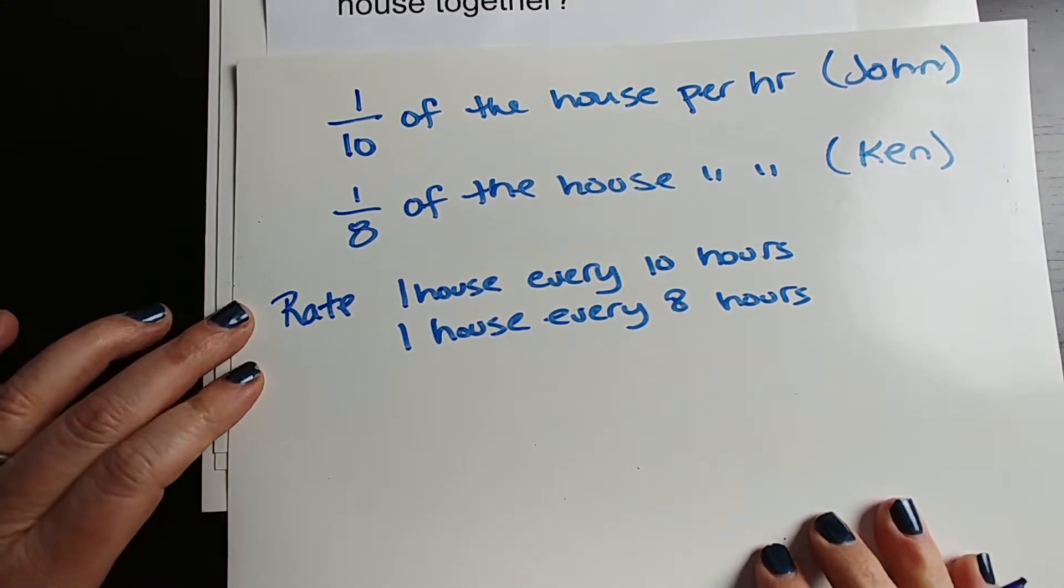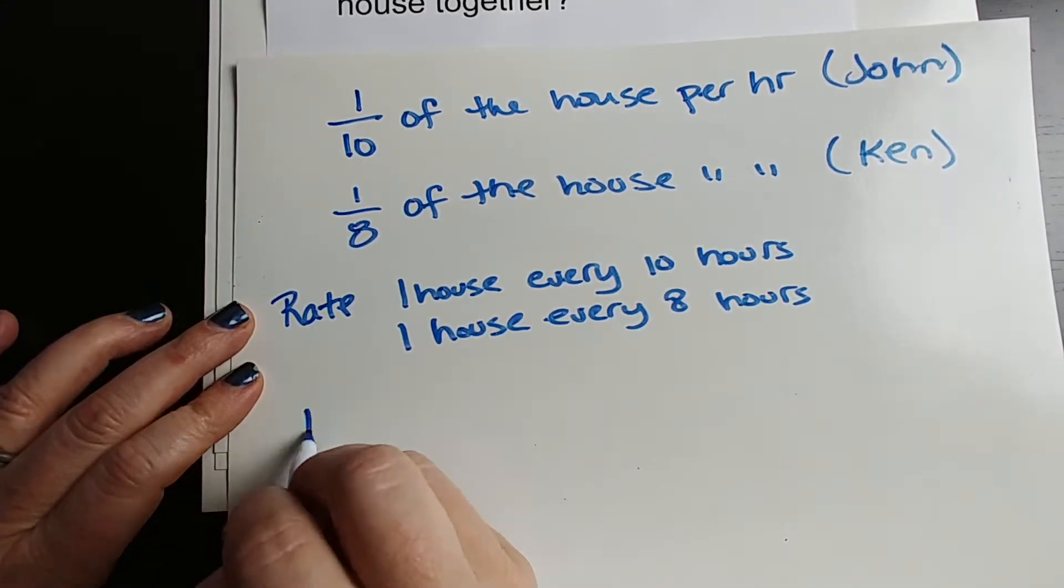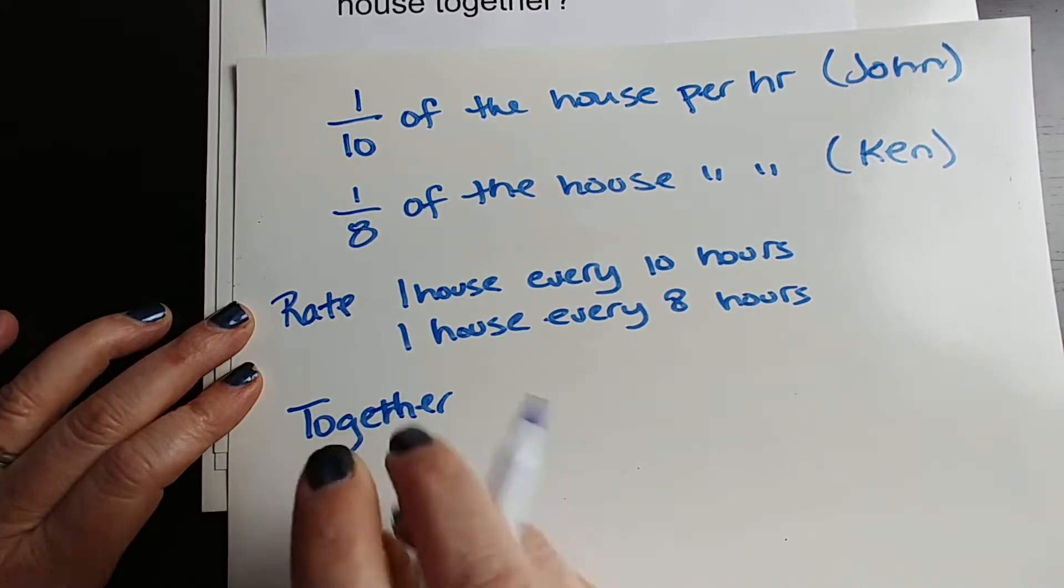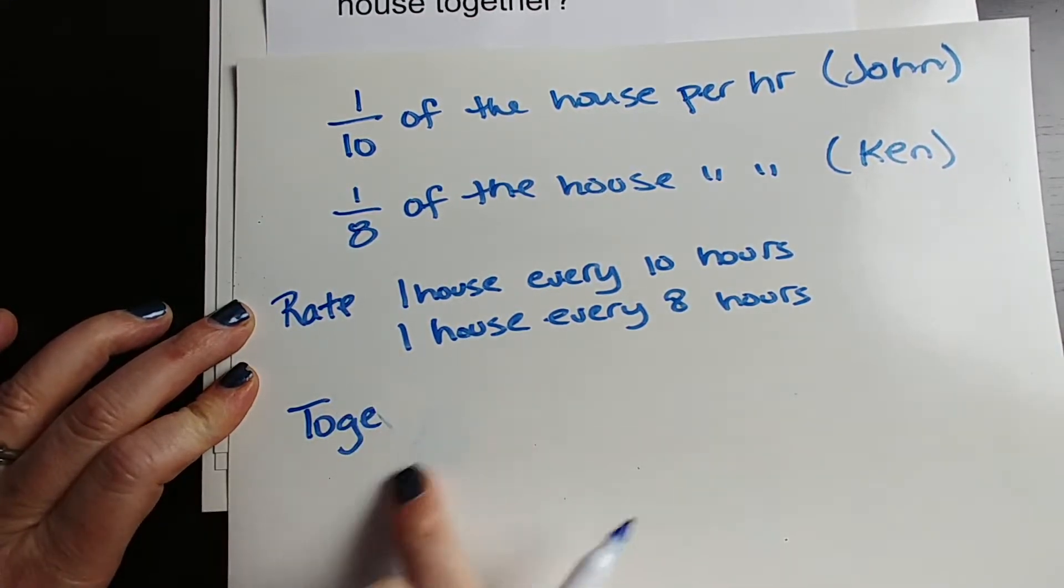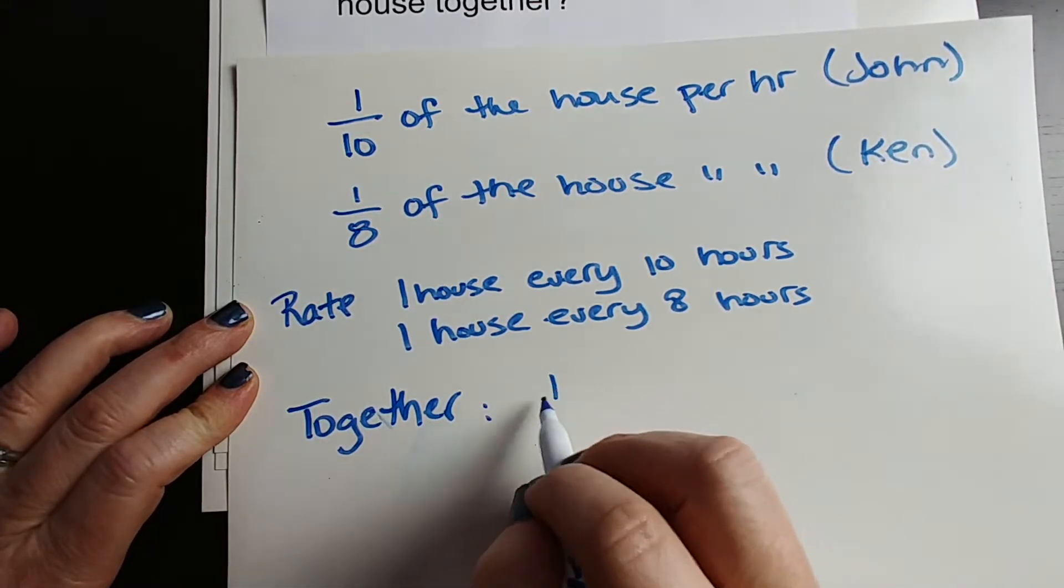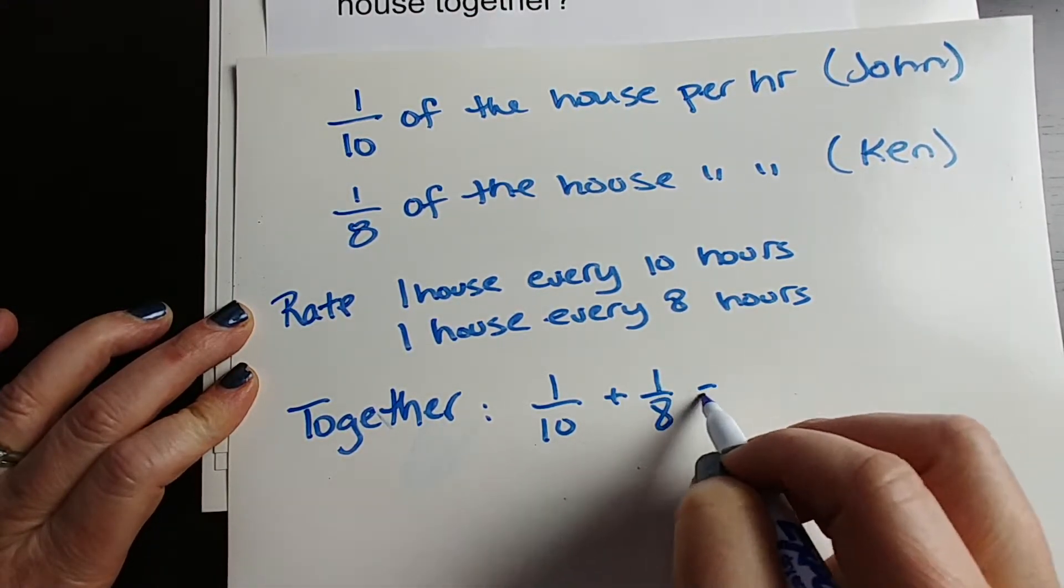Because what we can say then is, well, so together, their rate together, their rate is 1 tenth plus 1 eighth.